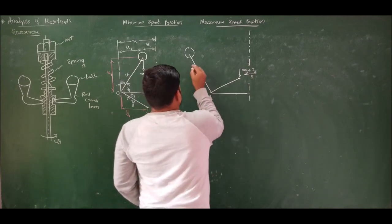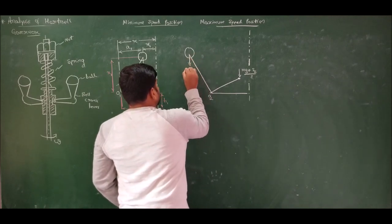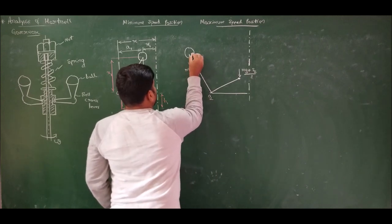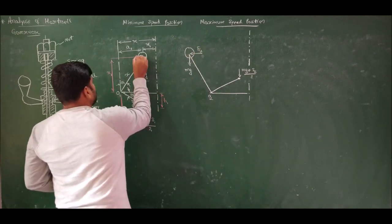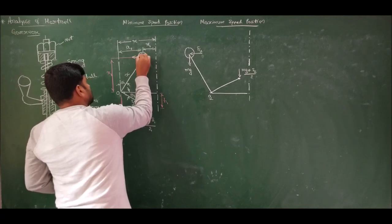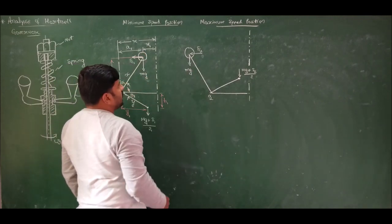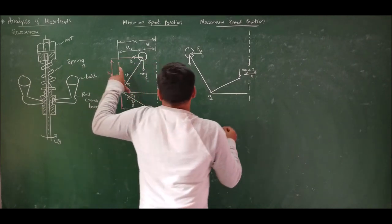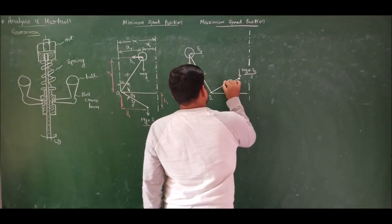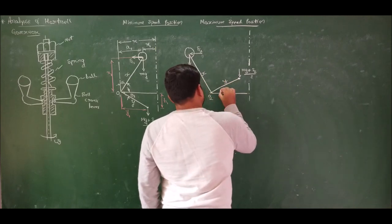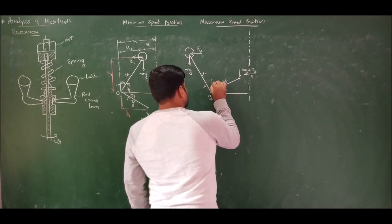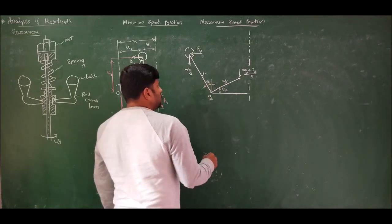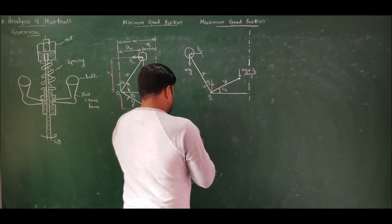The ball arm length is x and sleeve arm length is y. Let this angle be theta 2, so this angle must also be theta 2. We have obliquity effects: the distance between the two relevant points is y2. In the mean position, the radius is r (mean position), and the radius of rotation at maximum speed becomes r2. The distance a2 is r2 minus r. The obliquity effect length is x2, and the sleeve has been moved upward by h2.